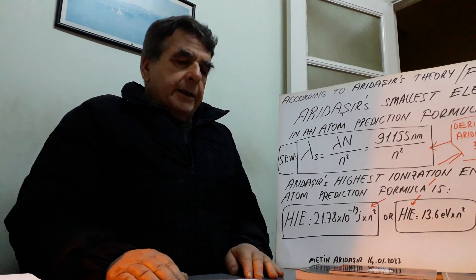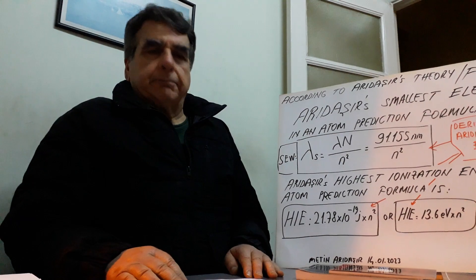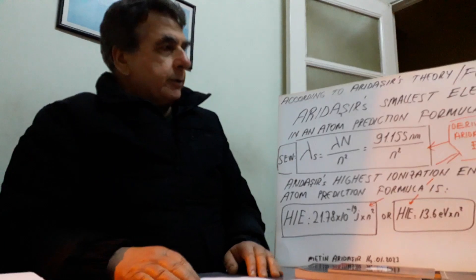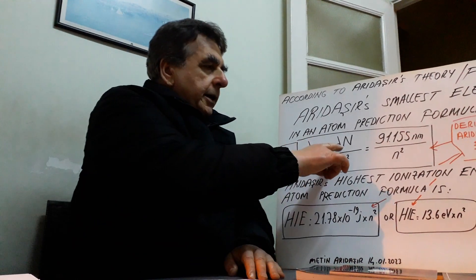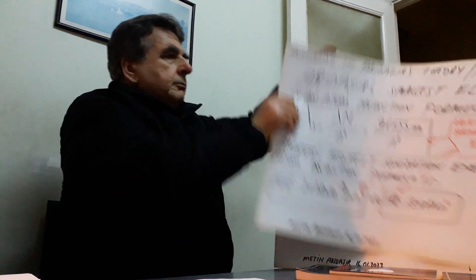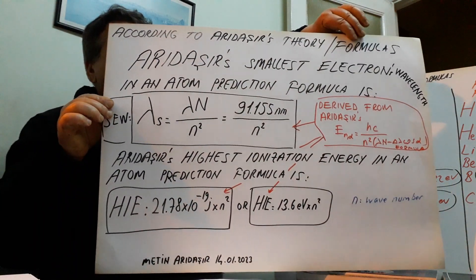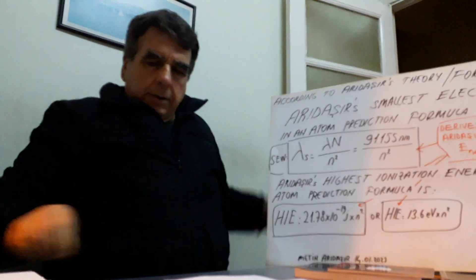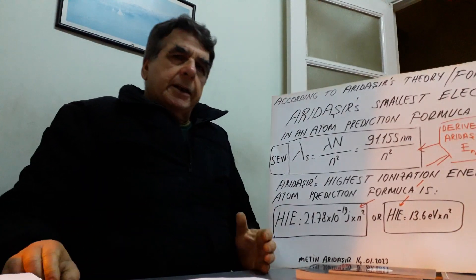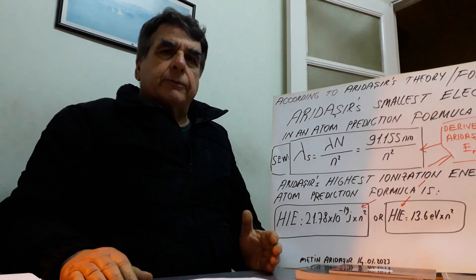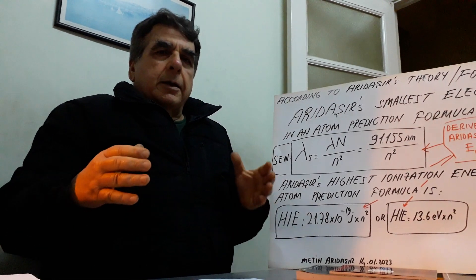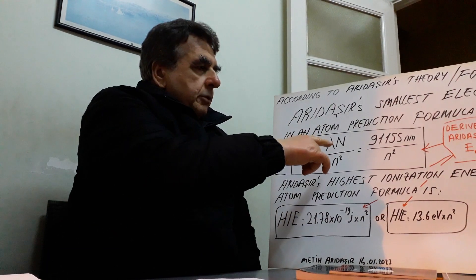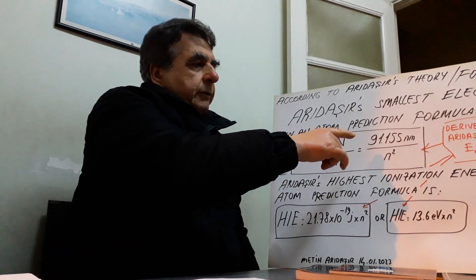Why are there different wavelength sizes of each electron in an atom? Remember from my former videos — Lambda normal selection. Lambda normal is a free electron motion form, a kind of free electron motion form.